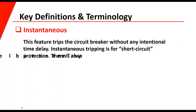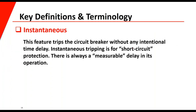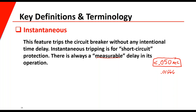Instantaneous tripping is a feature that trips the breaker without any intentional time delay — it trips during a short circuit. There is always some measurable amount of delay in its operation. For most circuit breakers, the number I look for when testing is less than 50 milliseconds — that's about three cycles of current flow. One cycle being 16.6 milliseconds, so three cycles is about 50 milliseconds. If a breaker is not tripping in less than 50 milliseconds when testing the instantaneous device, the breaker may be a little bit slow.